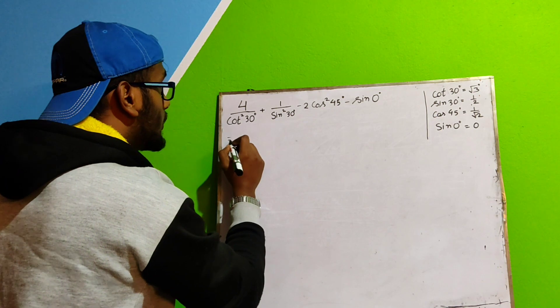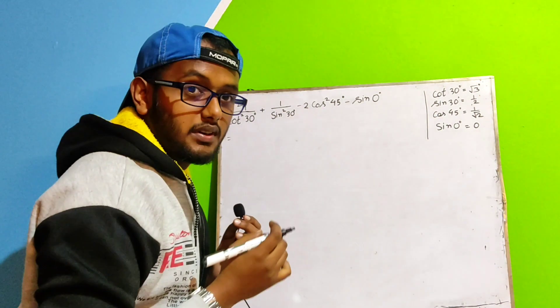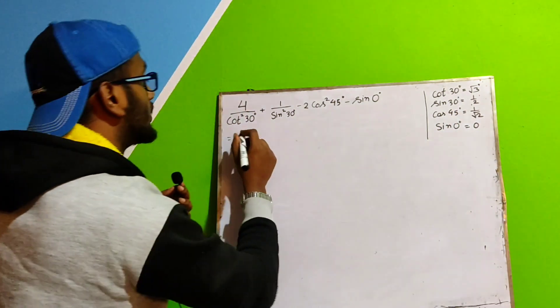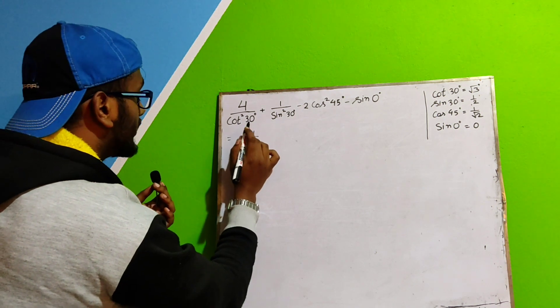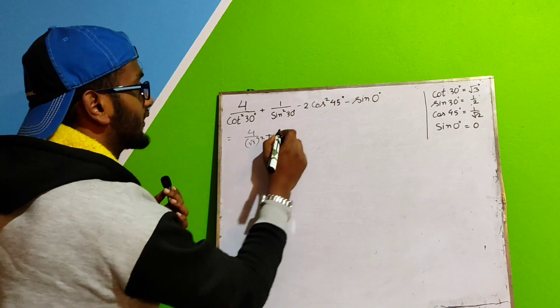So how do you do? We know cot 30° is equal to root 3. Since we are doing that first time, so I have written the values here. 4, what is cot 30°? Cot 30° is root 3, so cot² 30° is root 3 whole square plus.